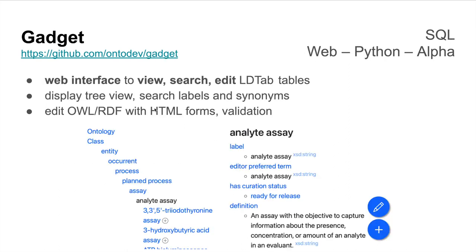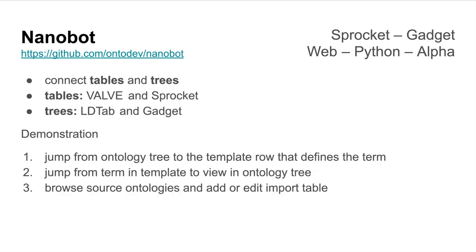Gadget is our ontology browser — a web interface for viewing, searching, and editing those LDtab tables, with tree views and synonym search. Because LDtab is so lightweight, this can be run with just a few hundred megabytes of RAM, and you can have a whole bunch of these things running all at once. That's an advantage even for large ontologies, an advantage over something like Robot.